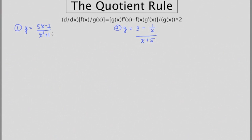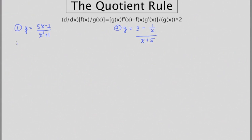That may seem a little bit confusing at first, but once we get started it's going to be pretty simple. Here's our first example. They give us the quotient of two functions, and we're going to set up a similar process like you do with the product rule.